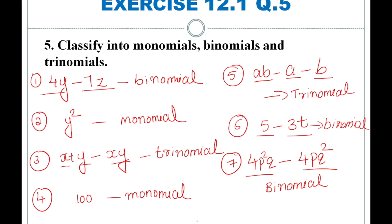The eighth expression is 7mn. This is only one term, so we call it a monomial. There is no plus or minus to separate it, so it remains one term — monomial.